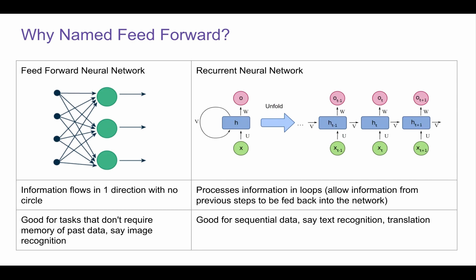And you must have heard of LSTM, a variant of this RNN. In contrast, we have Feed Forward Neural Network. In this case, the information flows in one single direction with no circle. So this is good for tasks that don't require memory of past data, say image recognition. Of course, this is before Transformer. As we have gone through already, Transformer is pretty creative in doing self-attention and position embedding to make sure we can have the whole context, but still do it in parallel instead of going through sequential.